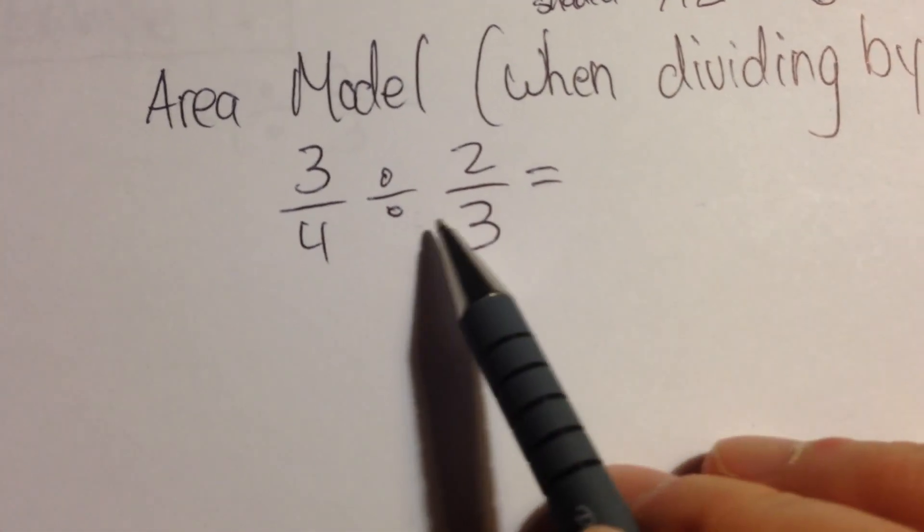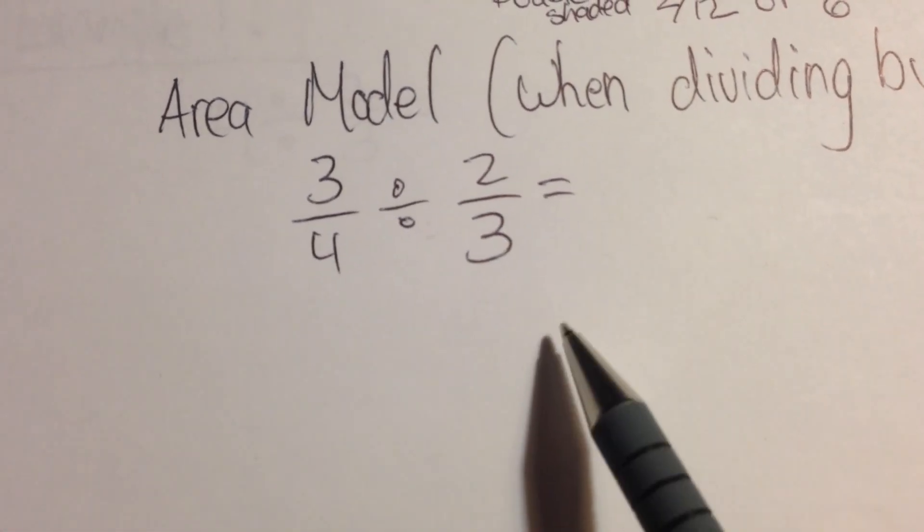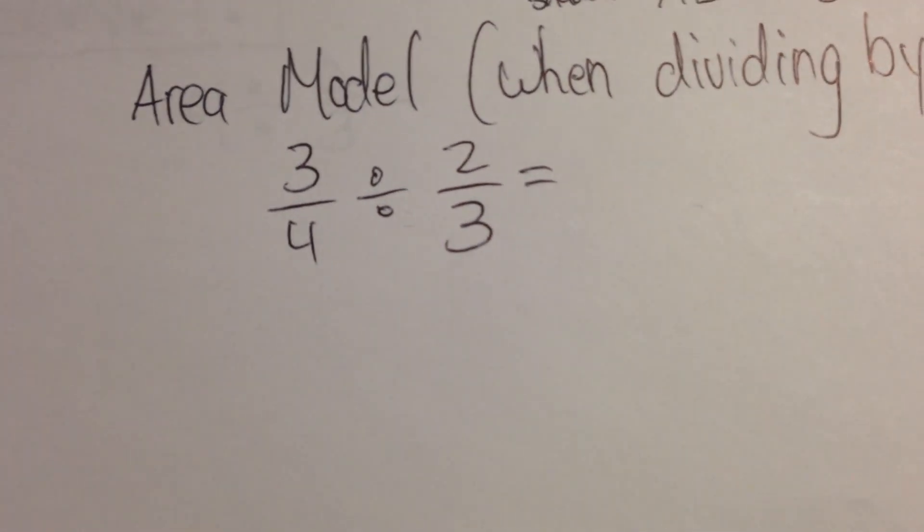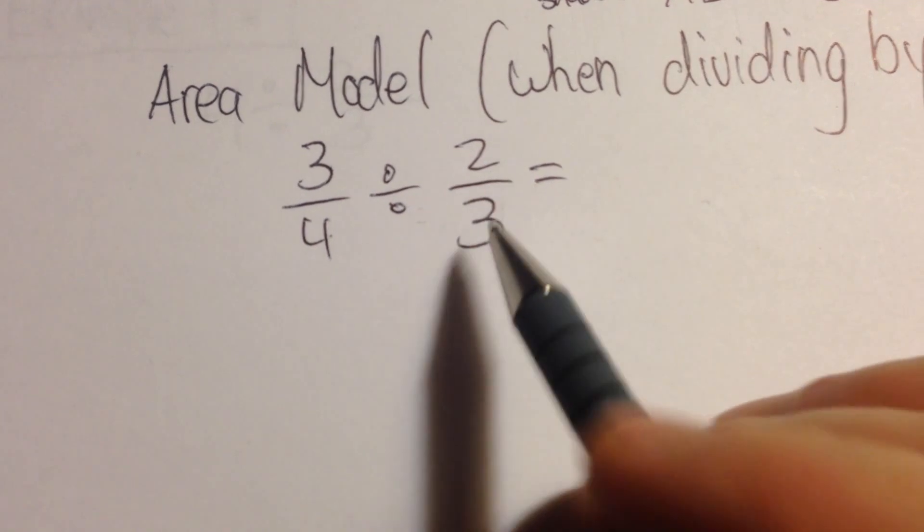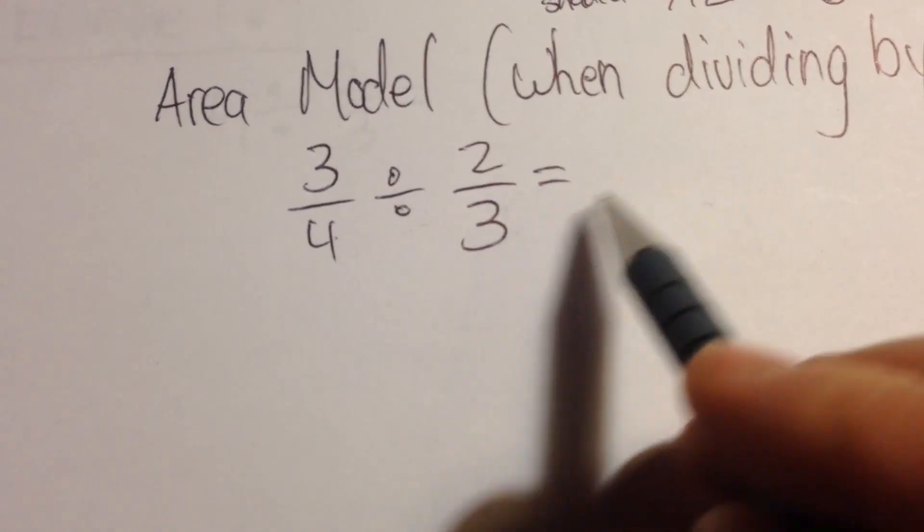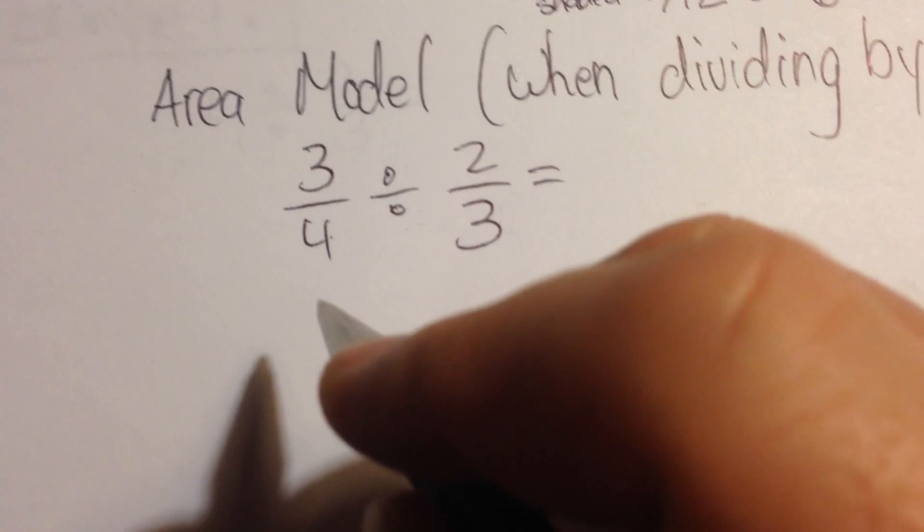Like always, I think the best thing to do is actually solve this and see what answer you're trying to draw your model towards. So, 3 fourths divided by 2 thirds. I can't divide across, so I will choose to use the reciprocal again.